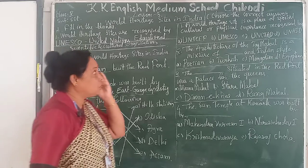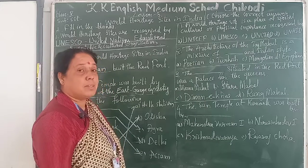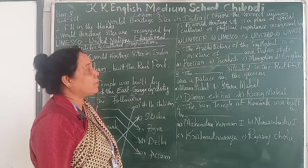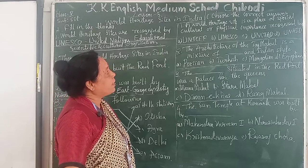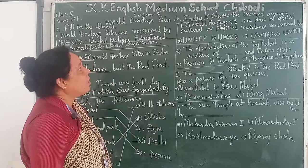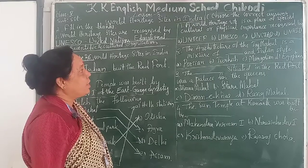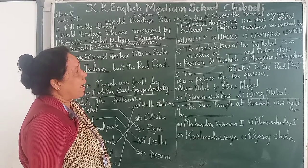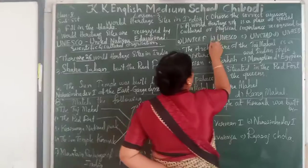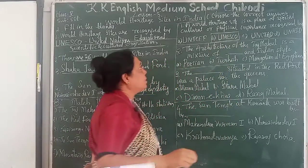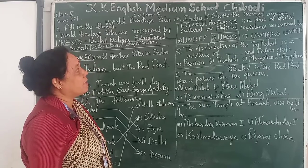Next one is choose the correct answer. Here sentences and options are both written, so you have to write a tick mark in the correct box. First one is: a World Heritage Site is the place of special cultural or physical importance recognized by — options are UNESCO, UNCTAD, and UNEP. The correct answer is UNESCO.